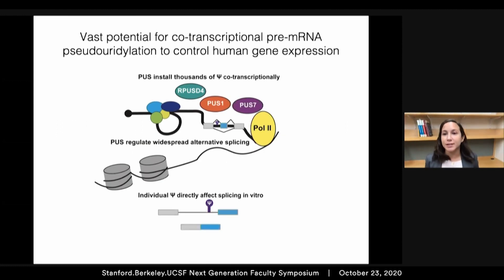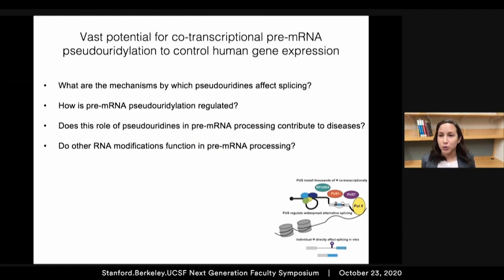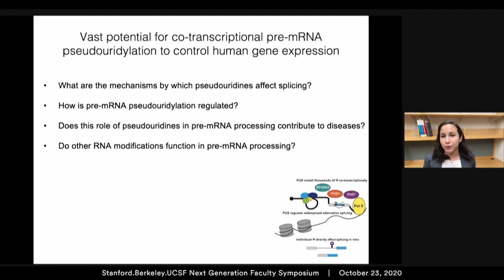To summarize: pseudouridine synthases install thousands of pseudouridines co-transcriptionally, these enzymes regulate widespread alternative splicing, and individual pseudouridines can directly affect splicing. This raises many exciting questions I look forward to addressing in my future lab: what are the mechanisms by which individual pseudouridines affect splicing? How is pre-messenger RNA pseudouridination regulated, and why are some regions targeted for modification and not others? Does this role of pseudouridines in pre-mRNA processing contribute to diseases such as during neuronal differentiation and in cancer? And do other RNA modifications similarly function in the processing of pre-messenger RNA?